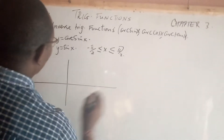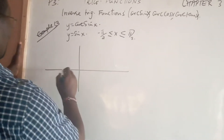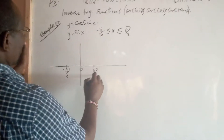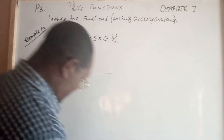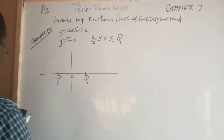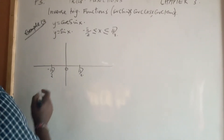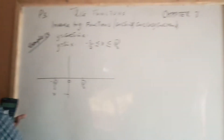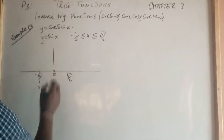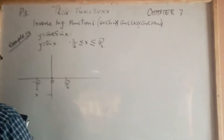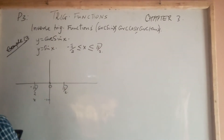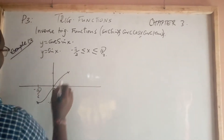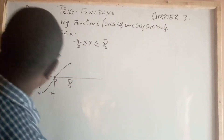So from negative π over 2 to π over 2, it is very important that we note: the sine of negative π over 2 gives negative 1, the sine of 0 gives 0, and the sine of π over 2 gives positive 1. So we are having a curve that looks like the restricted portion of the sine graph.